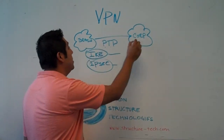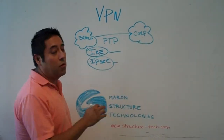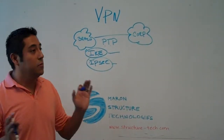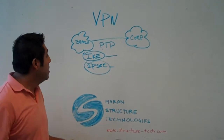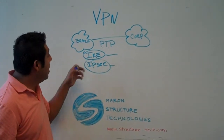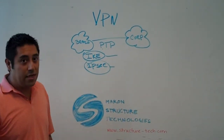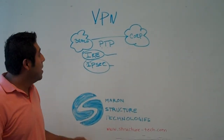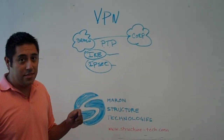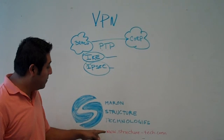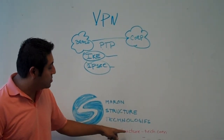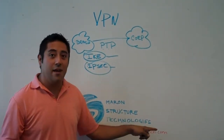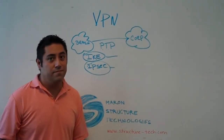So again, when you're connecting a branch to corporate, or maybe a corporate branch to another off-site customer site, make sure you have your resources identified. I'm David Antleys. This has been your Tech Minute. Come visit us at www.structure-tech.com. Thank you.